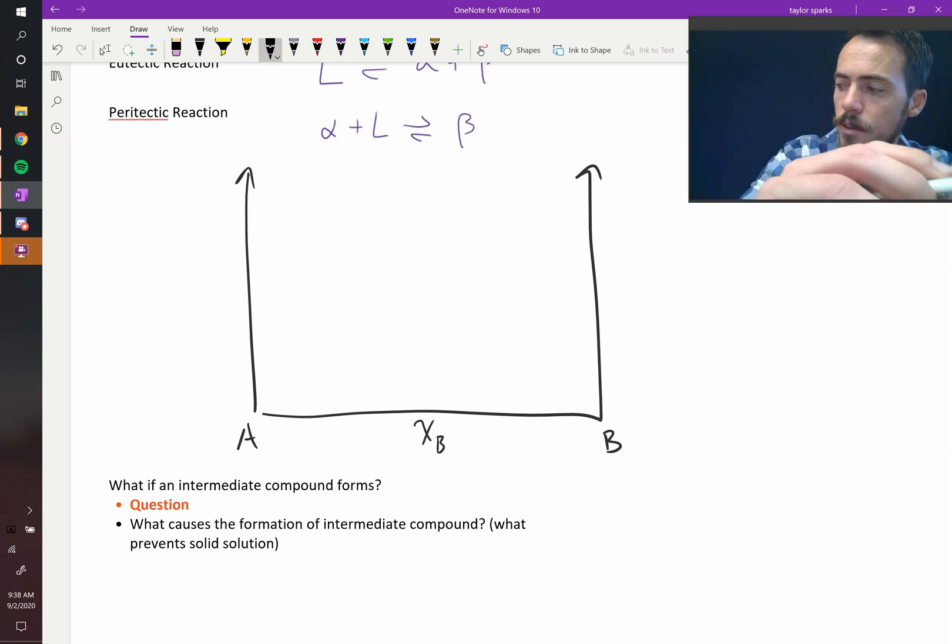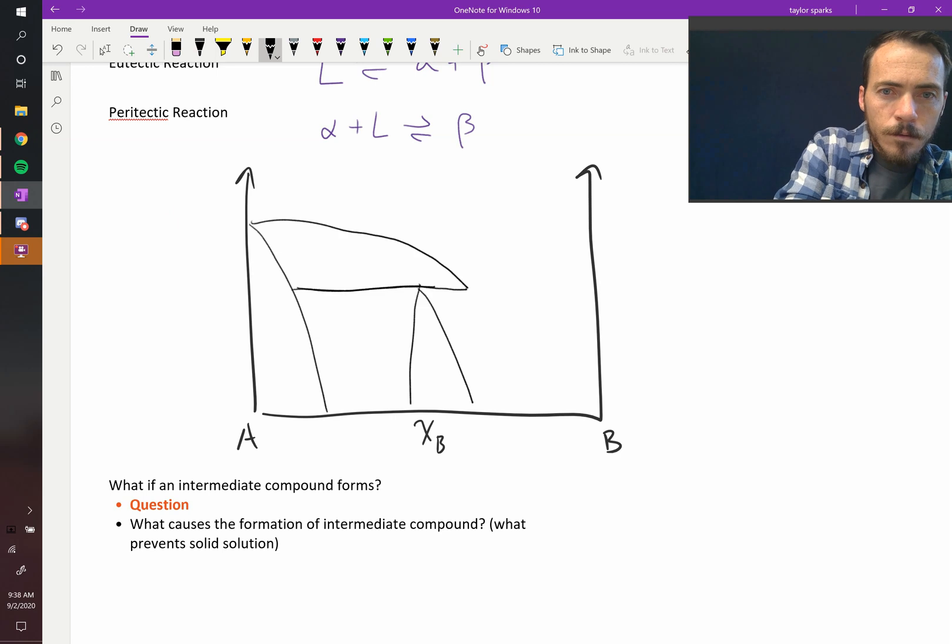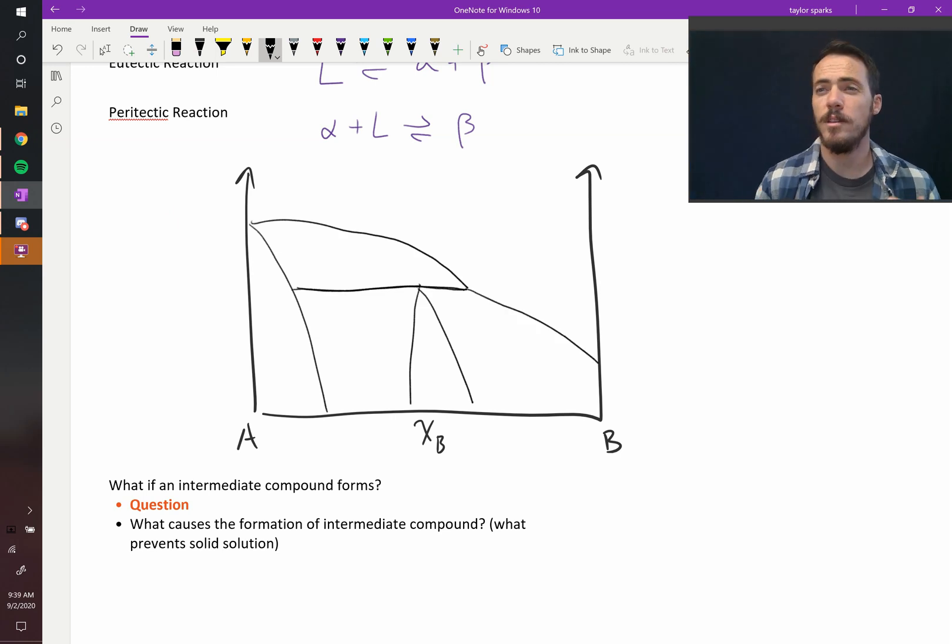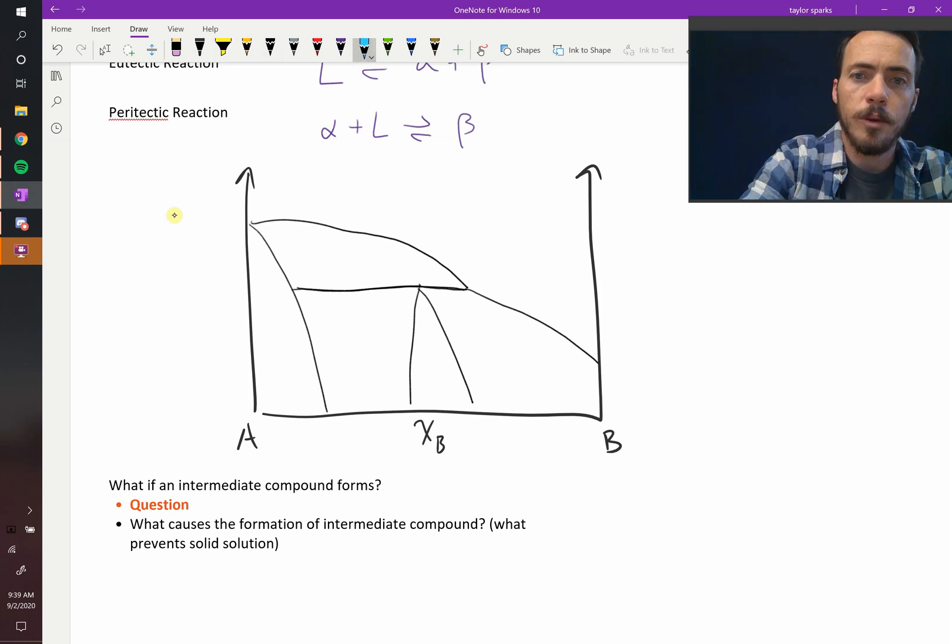Then, the diagram might look something like this. That's a flat line. Let's go ahead and label this thing using the rule that we just learned. Up top, we know that we're going to have our liquid.